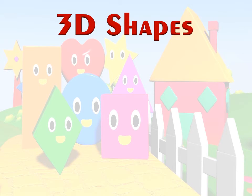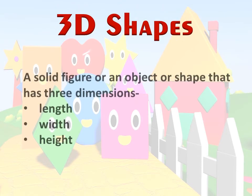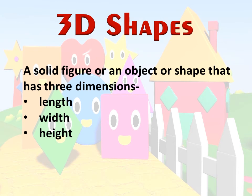Next, we will learn about 3D shapes. A solid figure or an object or shape that has three dimensions — length, width, and height — is called a 3D shape.